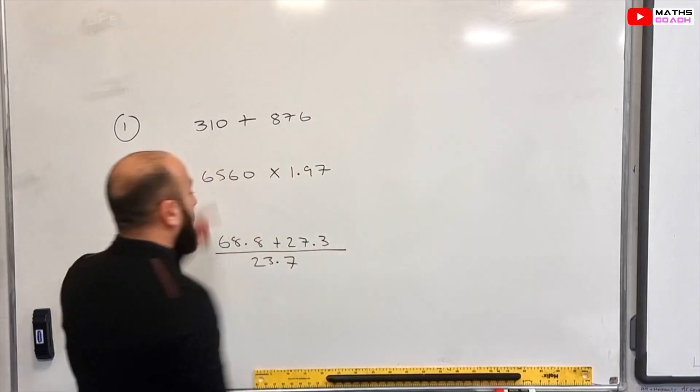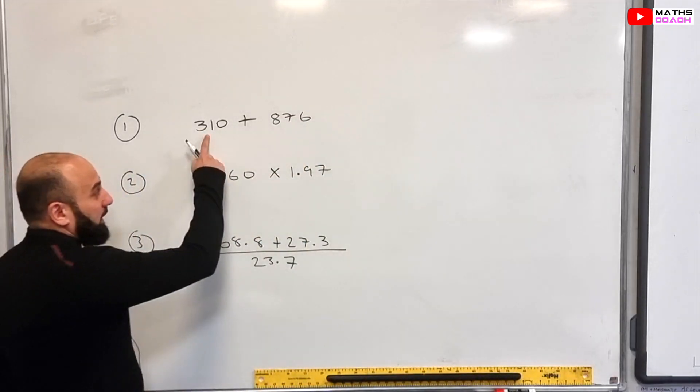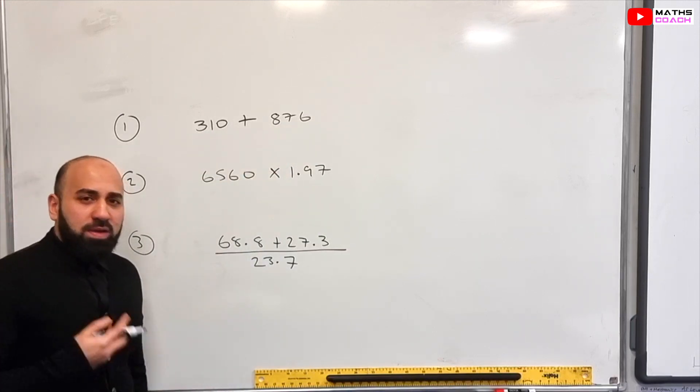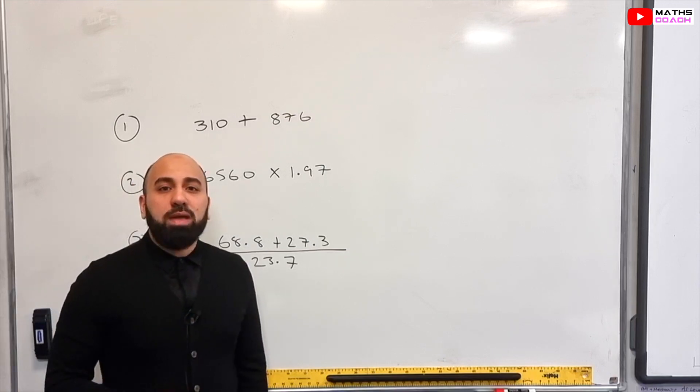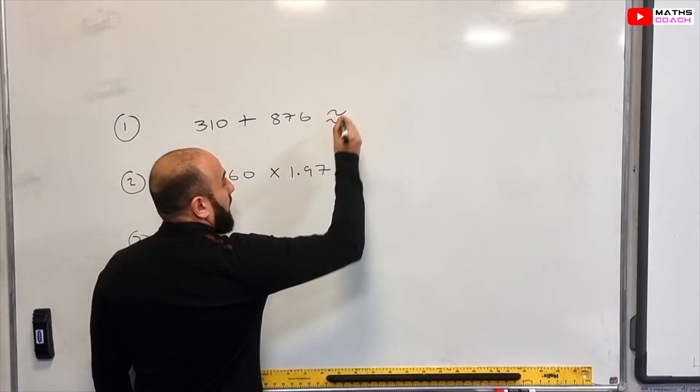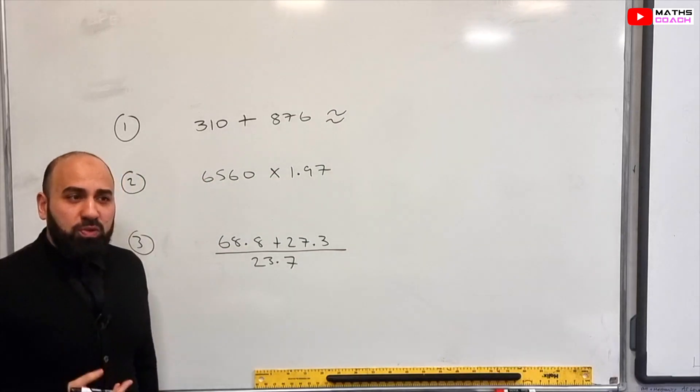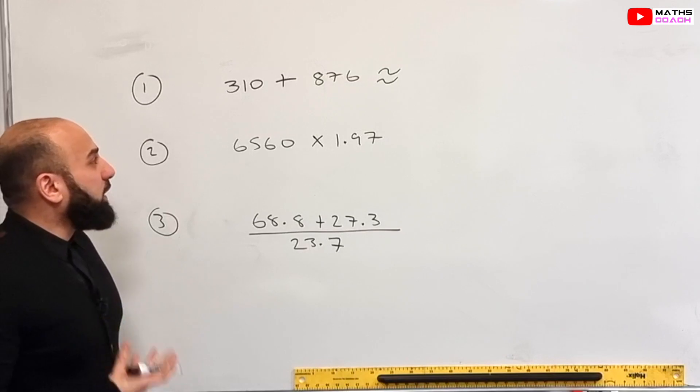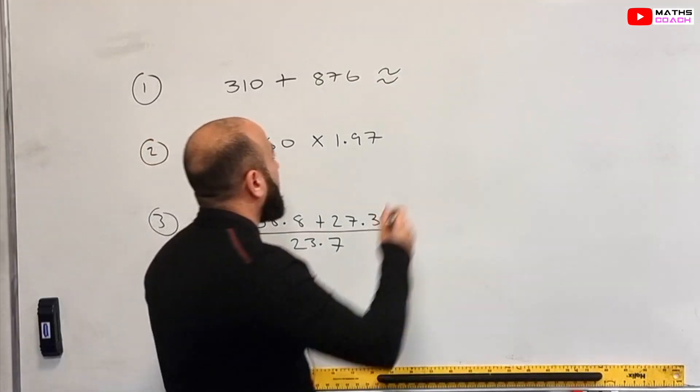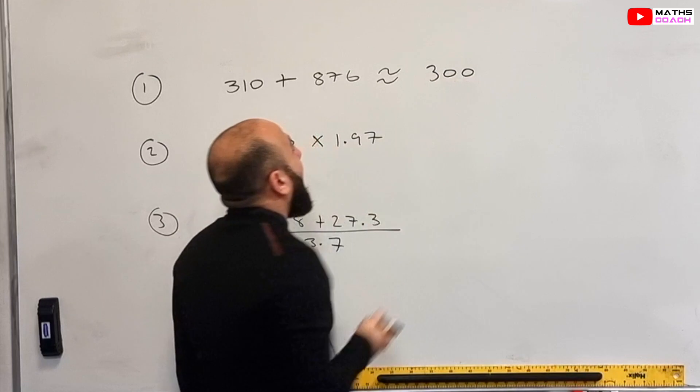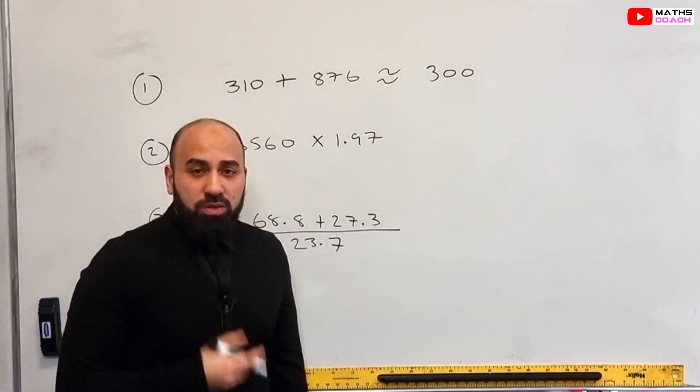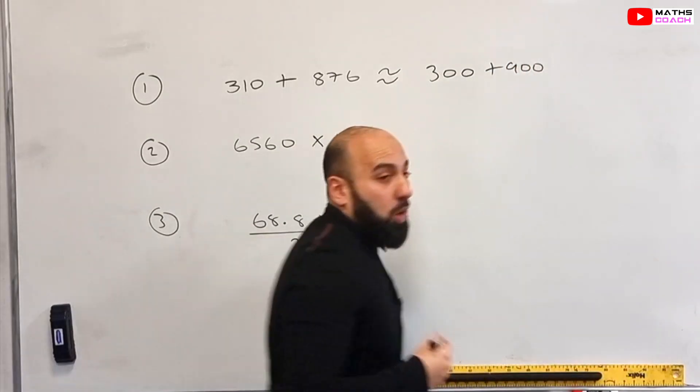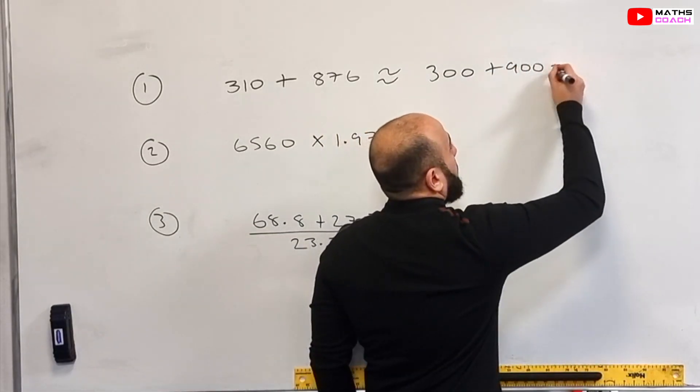Let's start with looking at this one. So we're going to be rounding each of these numbers to one significant figure, and then we'll be adding them together. This can be easily done without a calculator. This symbol here looks similar to an equal sign, but it's a symbol for estimation. So 310 to one significant figure is 300, and 876 to one significant figure is 900. And our answer is equal to 1200.